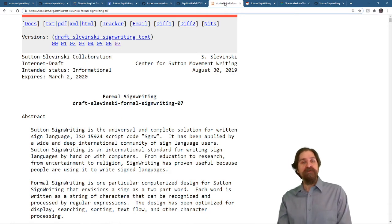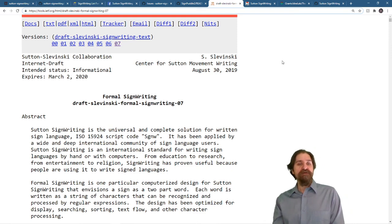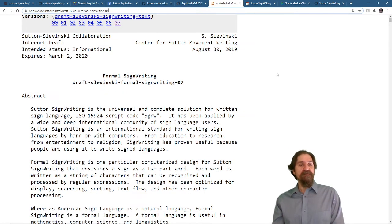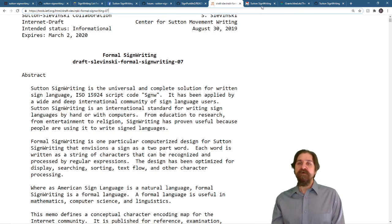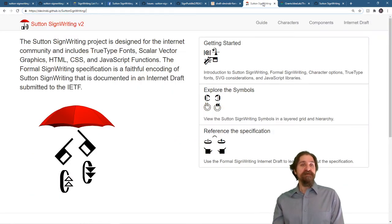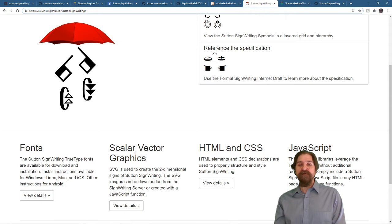If you want to look more into the technology, you can look at the Formal SignWriting Internet Draft that is available online as well. Or there is the Sutton SignWriting project on GitHub, and that has an extensive guide that talks about fonts and scalar vector graphics, HTML, CSS, and also the JavaScript.